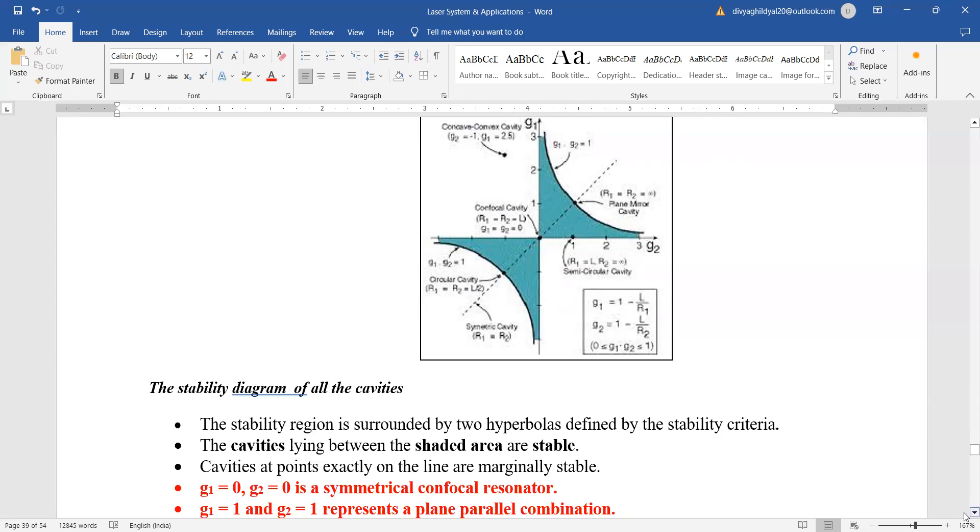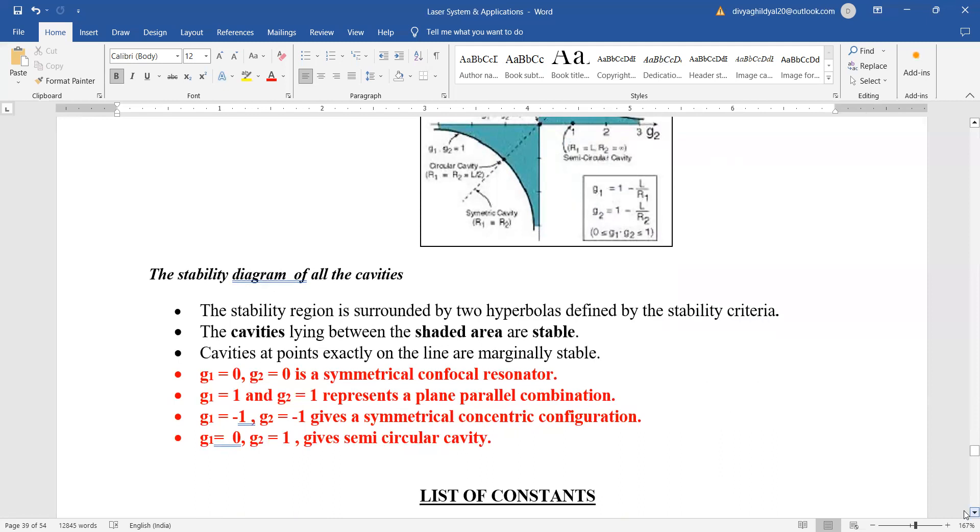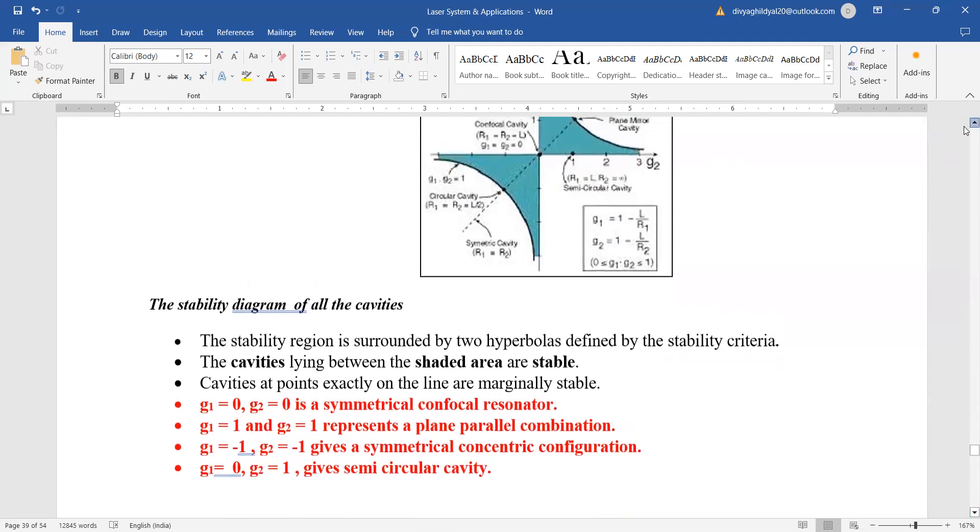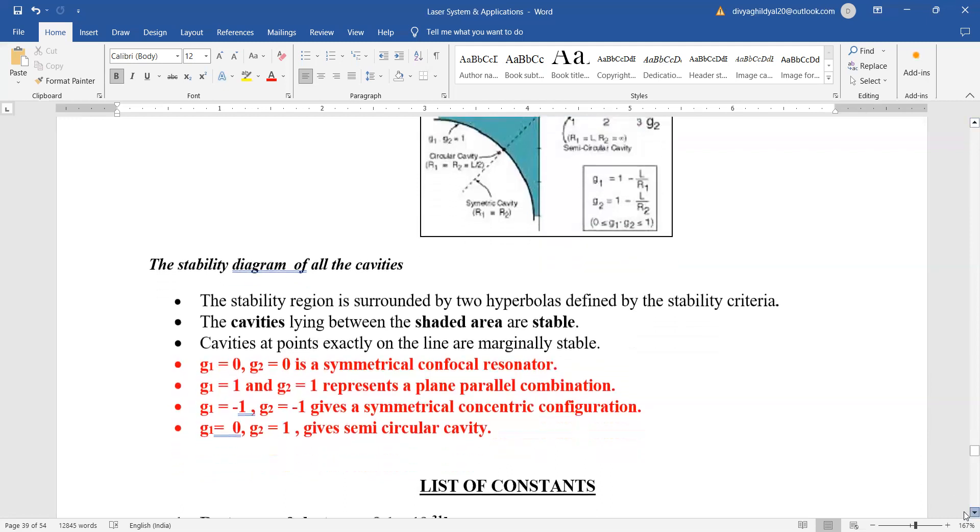Next, g1 equal to 1 and g2 equal to 1 represents a plane parallel combination. g1 equal to minus 1 and g2 equal to minus 1 gives a symmetrical concentric configuration. g1 equal to 0 and g2 equal to 1 gives semi-circular cavity.